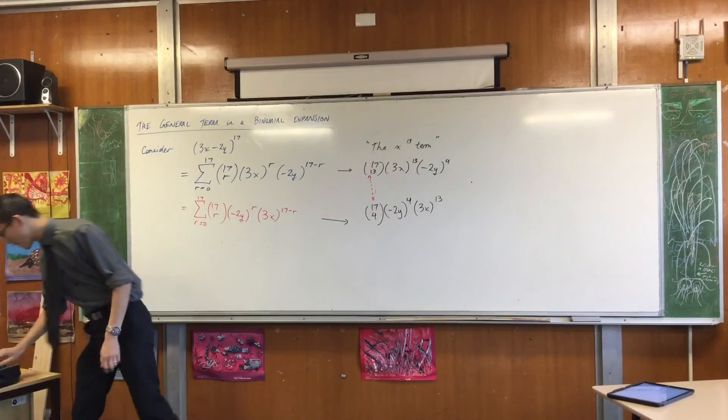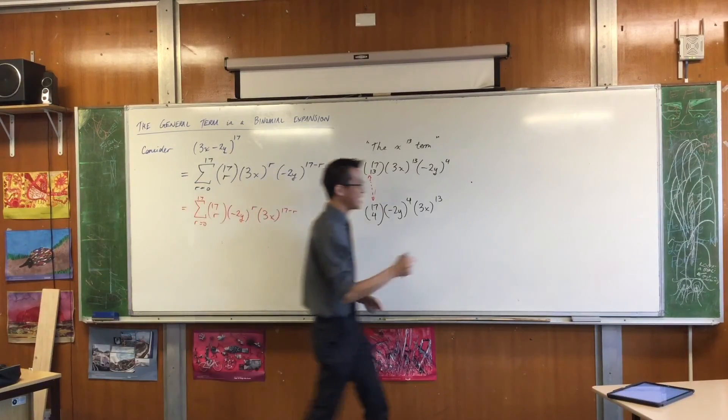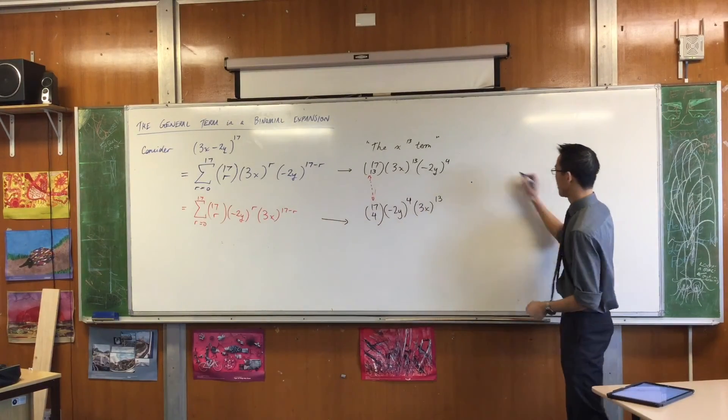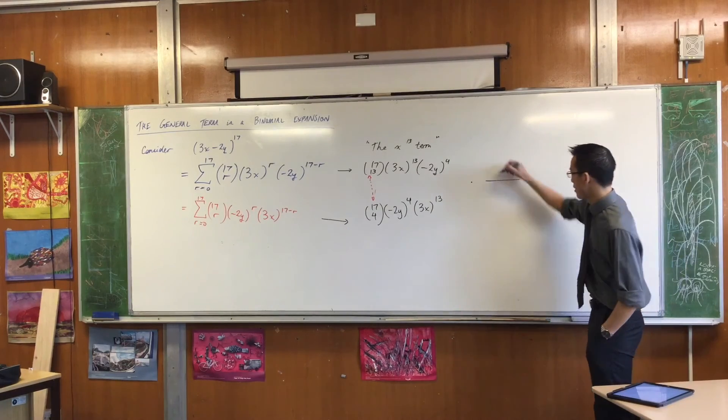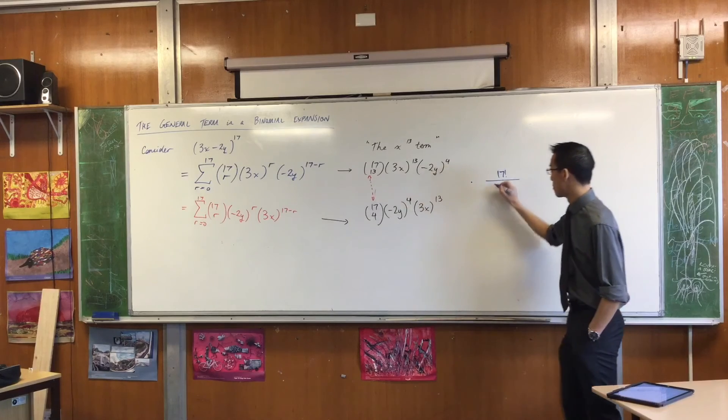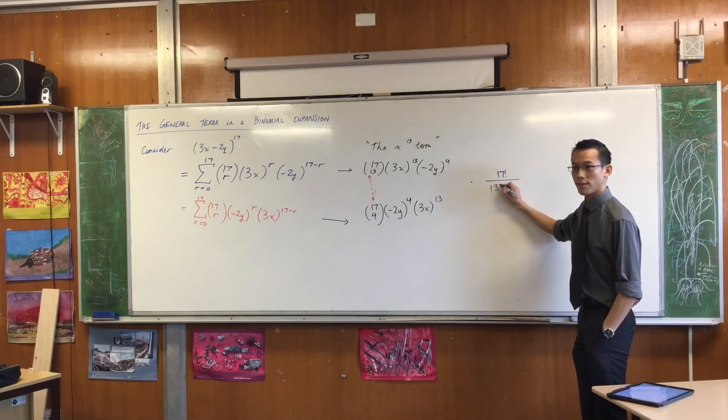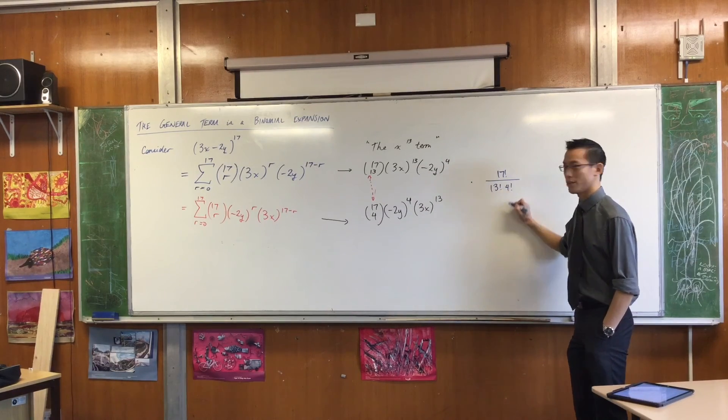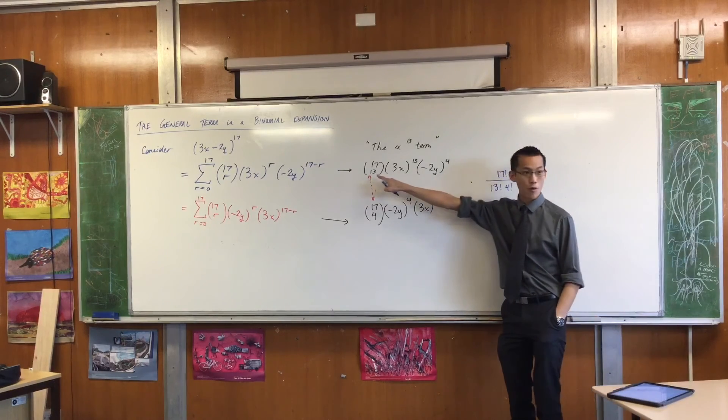Do you remember what our factorial notation for 17 choose 13 would be? So it's a fraction. What's on the top? 17 factorial. So I'm writing this one, right? So on the bottom there will be 13 factorial, 4 factorial, right? That's what I would write if I wrote that.